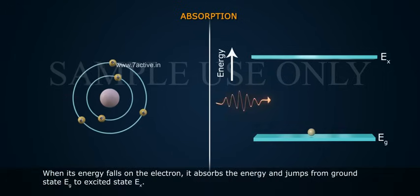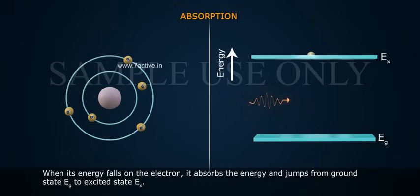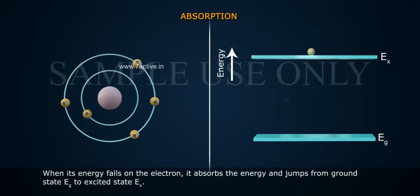When its energy falls on the electron, it absorbs the energy and jumps from ground state EG to excited state EX.